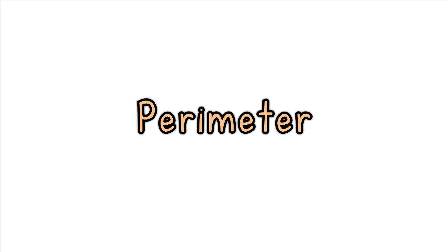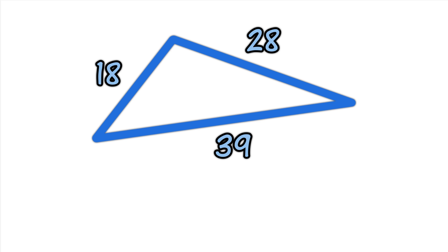Perimeter. The perimeter is the distance around the edge of the triangle. Just add up the three sides. Add up the three sides like this, and you have the perimeter.